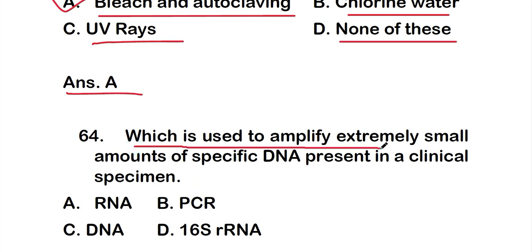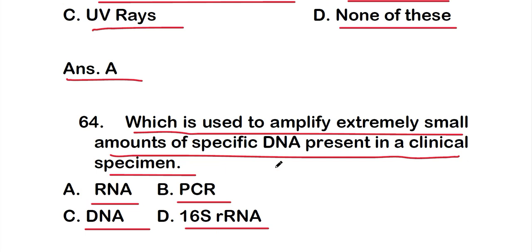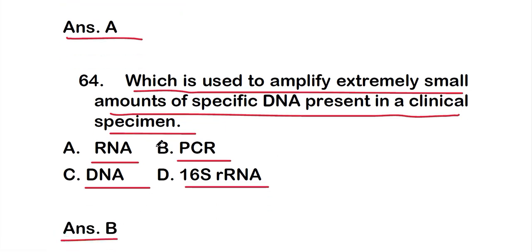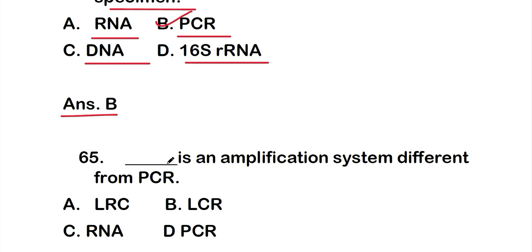Question 64: Which is used to amplify an extremely small amount of specific DNA present in a clinical specimen? Options: A: RNA, B: PCR, C: DNA, D: 16S rRNA. The right answer is option B, PCR — that is polymerase chain reaction — which amplifies extremely small amounts of specific DNA present in a clinical specimen.